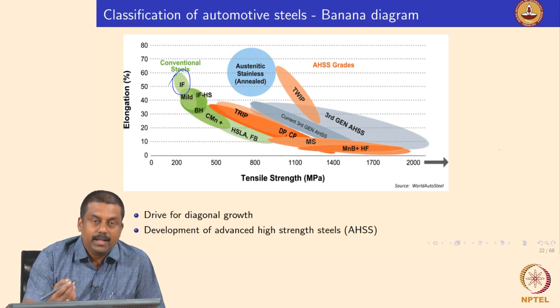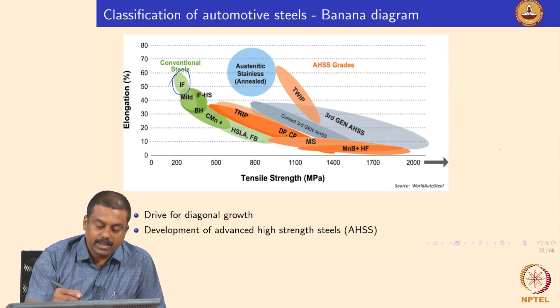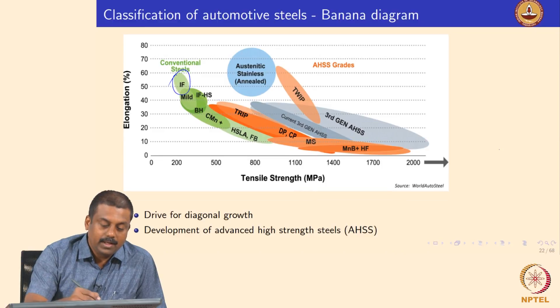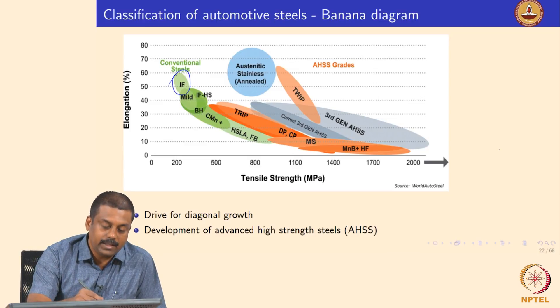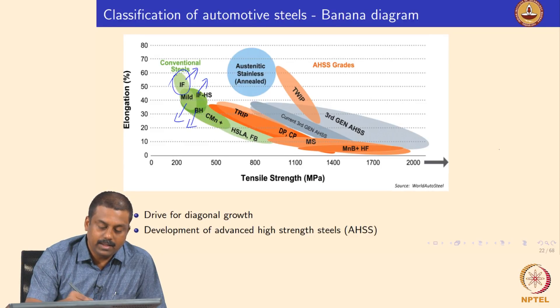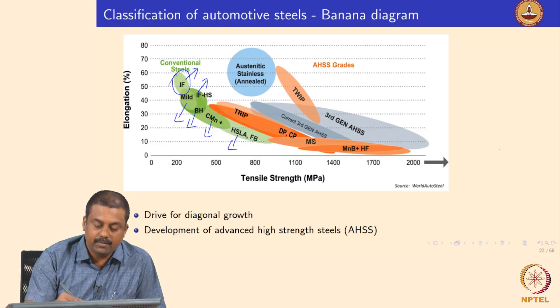The conventional automotive steels which were used a couple of decades earlier are already getting replaced with the advanced high strength steels, which we were looking at in the last unit. Now we will look at some basic introduction about these conventional steels — for example, the IF steels, the IFHS, the mild steel, the bake hardening steel, carbon manganese, HSLA, and ferritic bainitic steels.